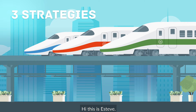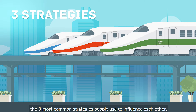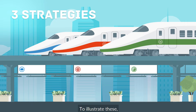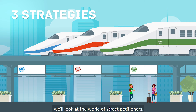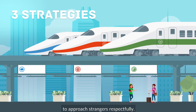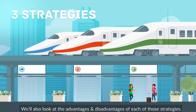Hi, this is Estev. In this video, we'll uncover the three most common strategies people use to influence each other. To illustrate these, we'll look at the world of street petitioners operating in a train station. If you've ever done volunteering work, you'll know just how difficult it is to approach strangers respectfully. We'll also look at the advantages and disadvantages of each of those strategies.